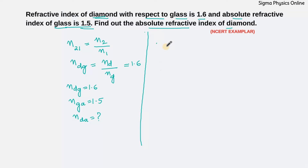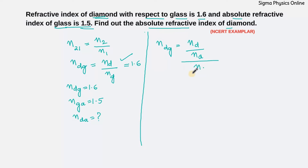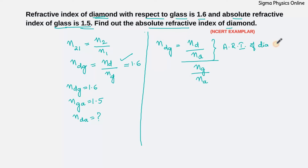Let's solve this. The refractive index of diamond with respect to glass can be written as the refractive index of diamond divided by the refractive index of air, divided by the refractive index of glass divided by the refractive index of air. Why did I divide by the refractive index of air? Because the numerator gives the absolute refractive index of diamond — that is the refractive index of diamond with respect to air — and the denominator gives the absolute refractive index of glass — that is the refractive index of glass with respect to air.